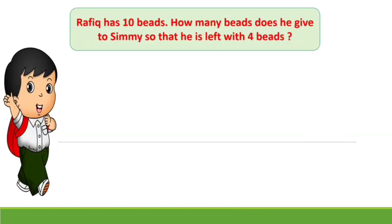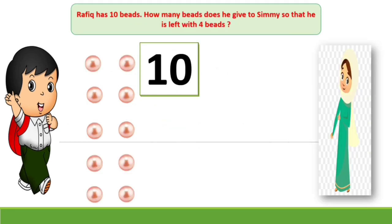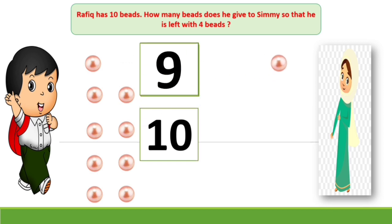Rafiq has 10 birds. How many birds does he give to Simi so that he is left with 4 birds? Let's count these birds Rafiq is having. 1, 2, 3, 4, 5, 6, 7, 8, 9 and 10. So he has 10 birds. He has to give some birds to Simi. When he gives 1 bird to Simi, he has 9 now.